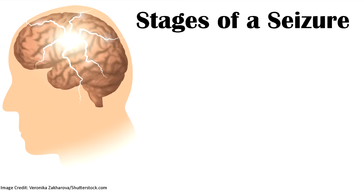Before discussing different types of seizures, let's talk about the stages of a seizure. We can divide how a person experiences a seizure into stages, and these stages vary depending on the seizure type. Some seizures will have an aura, some will not. Some will have a very fast post-ictus recovery, while others can take hours to days.